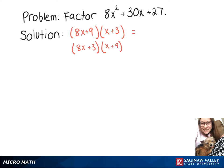When we FOIL those out and see what we get, this top one would give us 8x squared plus 33x plus 27. So that's not what we started with, so it can't be that one.